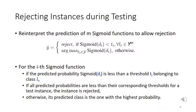Let us reinterpret the prediction of M sigmoid functions to allow rejection. A testing instance does not belong to class Li if the predicted probability from the i-th sigmoid function is smaller than a threshold Ti. When all predicted probabilities of an instance are smaller than their corresponding thresholds, the instance is rejected. Otherwise, the instance's predicted class is the one with the highest probability.